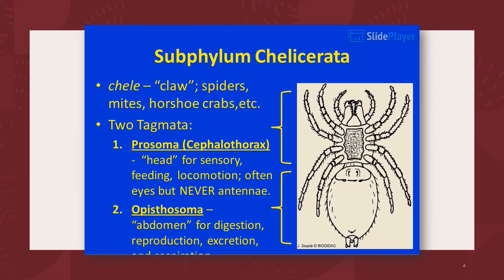The arachnids, specifically the ticks and mites, belong to the subphylum Chelicerata. The word Chelicerata comes from 'chele,' meaning claw. This subphylum consists of the ticks and mites, the spiders, the crabs, and others. This subphylum is characterized by two tagmata, or body regions. The first region is known as the prosoma, which represents the cephalothorax, and it functions for sensory, feeding, and locomotion.